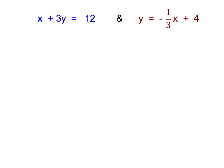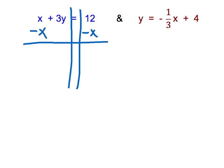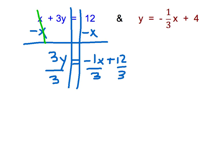Let's take a look at another example — make sure you write these in your notes. The first equation is not in slope-intercept form, so I'll do inverse operations. The x's cancel on the left, giving me 3y equals negative 1x plus 12. My next inverse operation is divide by 3 — everything gets divided by 3, the 3s cancel, and I get y equals negative one-third x plus 4.